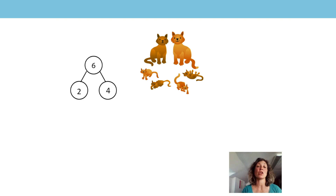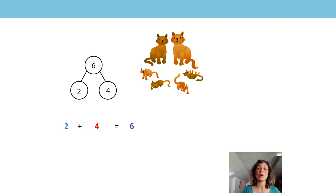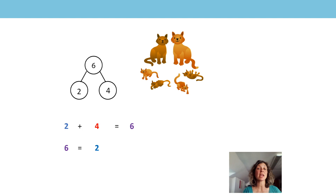So I can write an addition equation to go with this. I can write two adult cats plus four kittens is equal to six cats. What does the two represent? Yes, the addend two represents the two adult cats. What does the four represent? The addend four represents the four kittens. And what does the six represent? Six is the sum — it represents how many cats we have all together. So can I also write my equation like this? Six cats is equal to two adult cats plus four kittens.